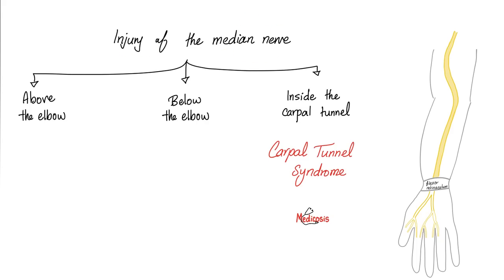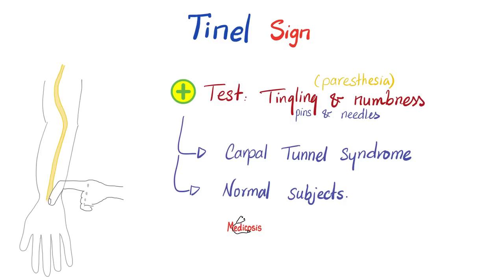The median nerve can get injured in many places. Most commonly at three sites: above the elbow, below the elbow, or inside the carpal tunnel. Today's video is the story of carpal tunnel syndrome. How do I know if my patient has carpal tunnel syndrome? There are physical exam findings, nerve conduction studies, electromyography, and ultrasound.